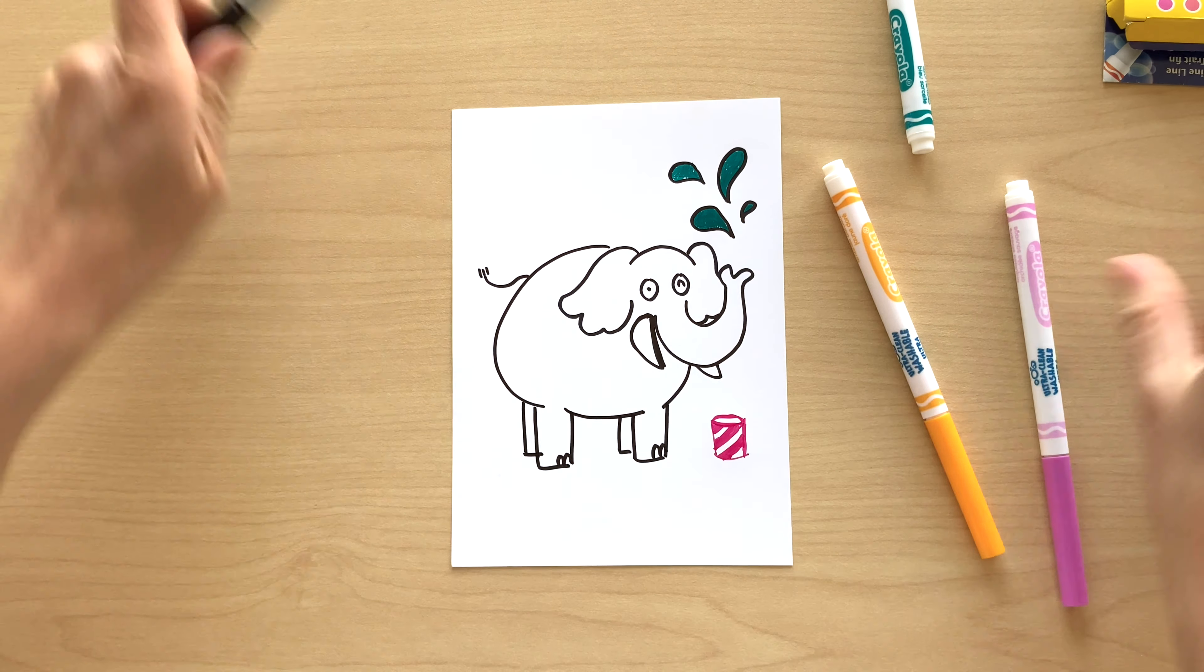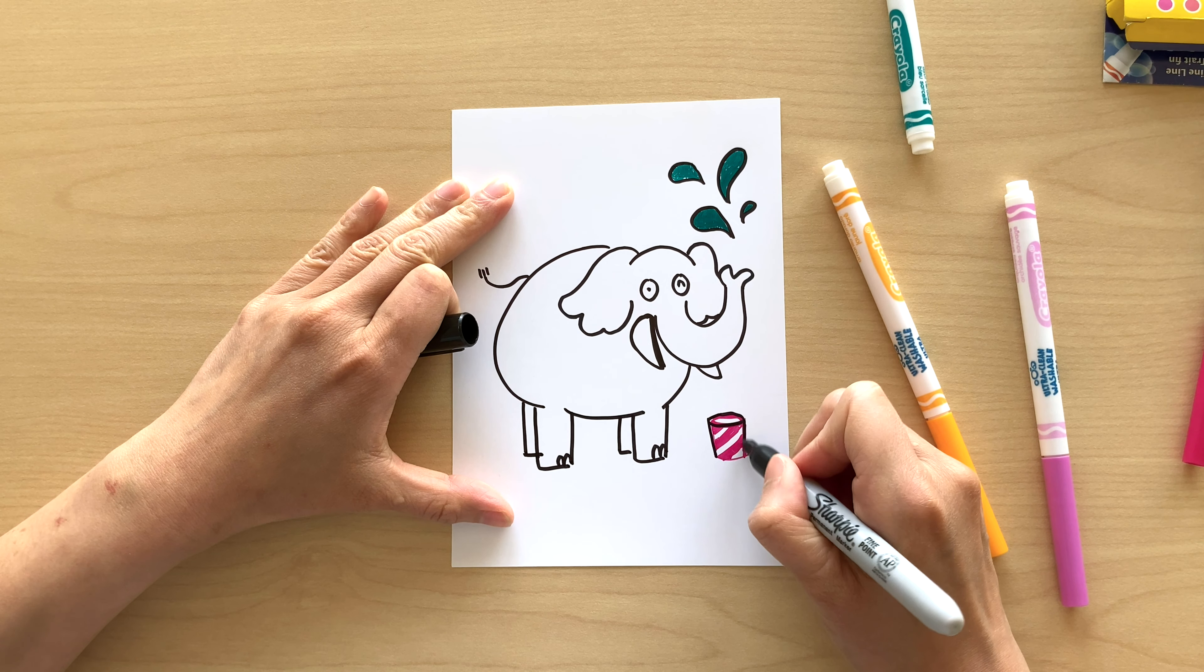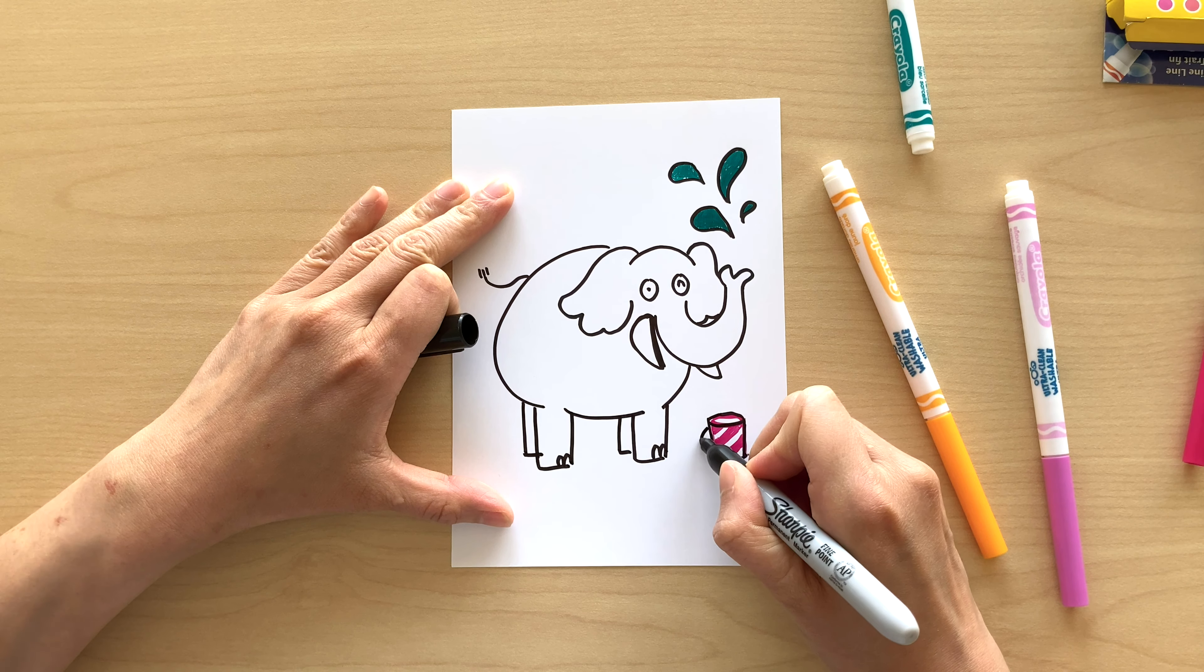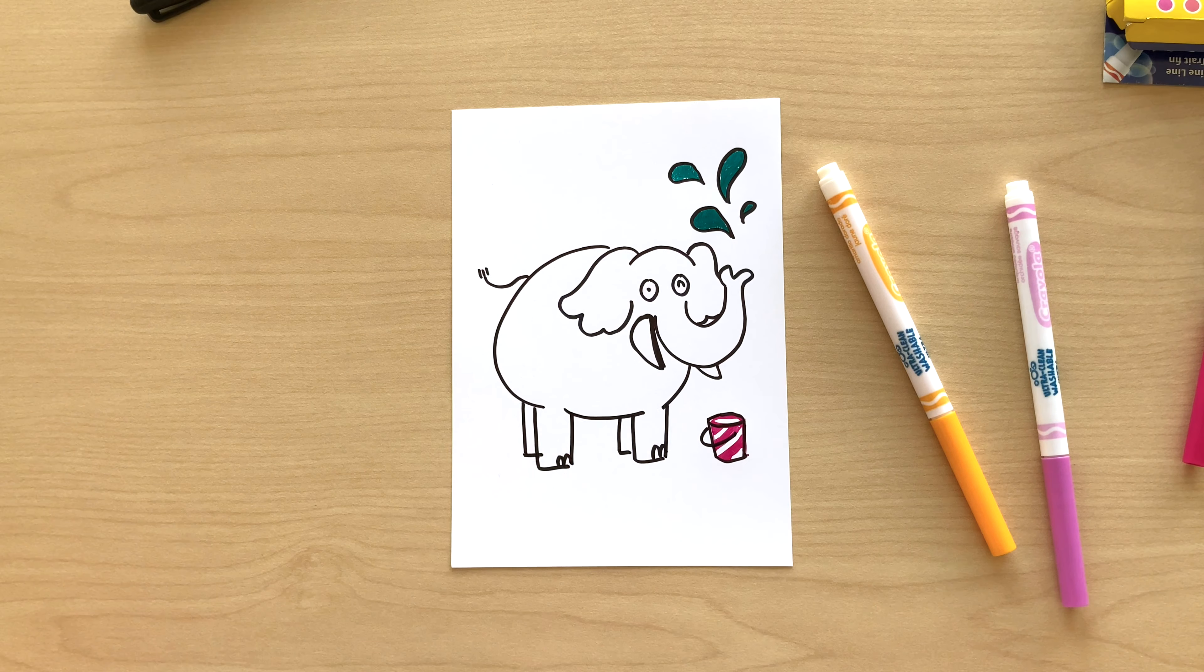Here I'm using my black marker to outline the bucket so you can clearly see it's a beautiful stripy bucket. And I'll color in some water color inside the bucket as well.